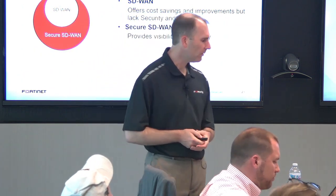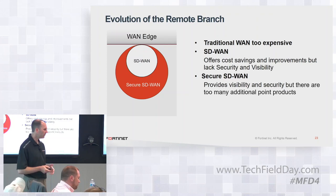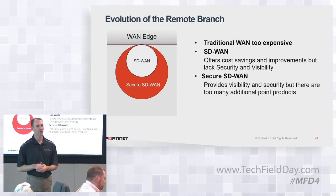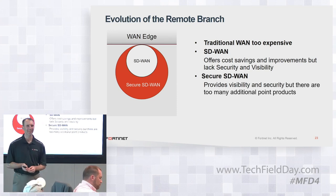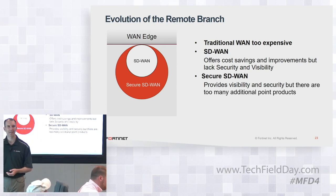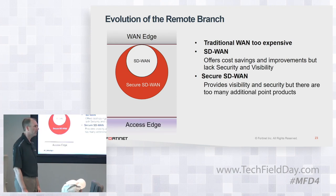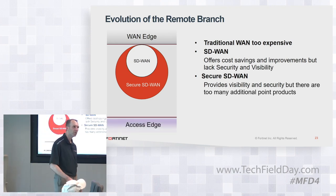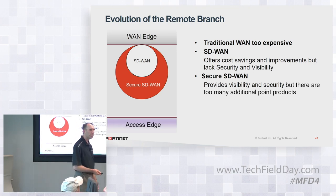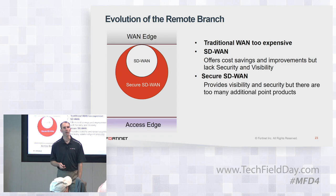There is still one remaining problem: if you look at the branch as a whole, there are still a lot of other point products out there. Many have to do with the access edge — the switching, the APs, all the devices hanging out there and how to secure them. You still need equipment for that, and it's still a management hassle.